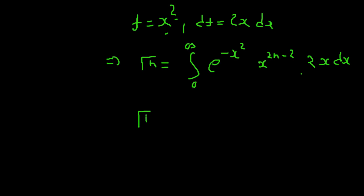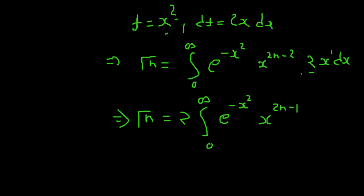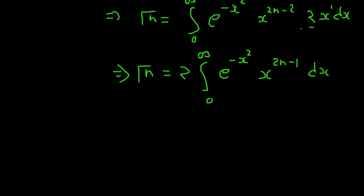Let's further simplify. Taking the 2 outside the integral, we get 2 times the integral of e to the power minus x squared, times x to the power 2n minus 1, dx — since 2n minus 2 plus 1 gives 2n minus 1.